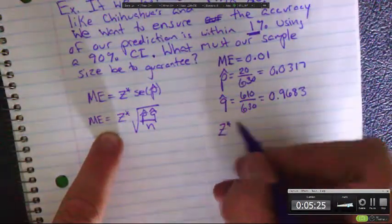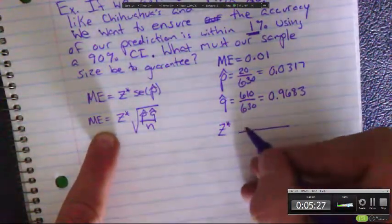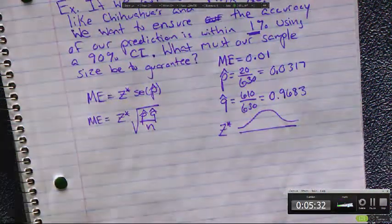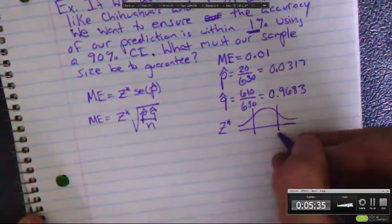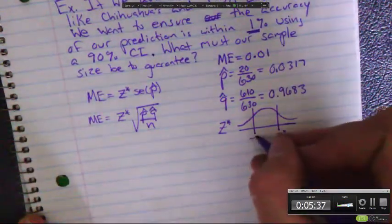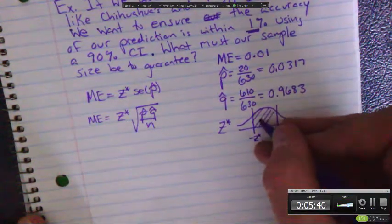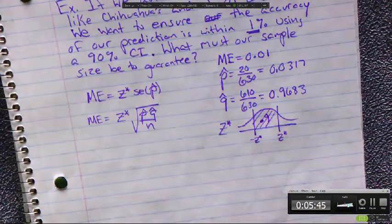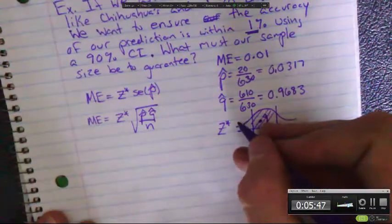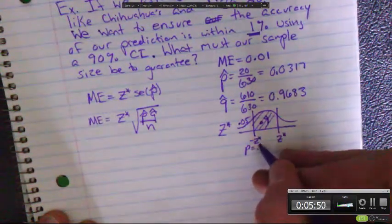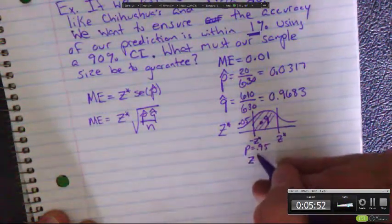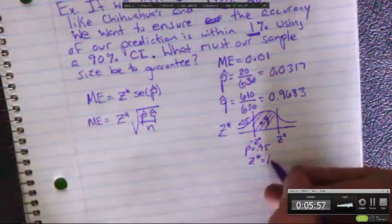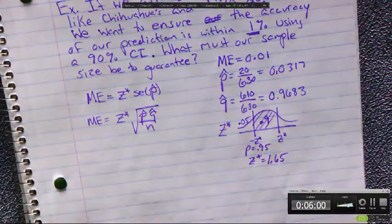Z-critical. If it said an 82% confidence interval, we wouldn't just be able to look back at our notes. We want a 90% confidence interval, so this is 90%. How much total data is outside of that? 10%. So this is 0.05, making the p-value 0.95. We go to our chart. It's 1.65. Z-critical is 1.65.